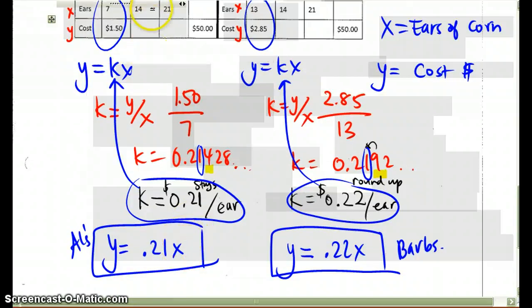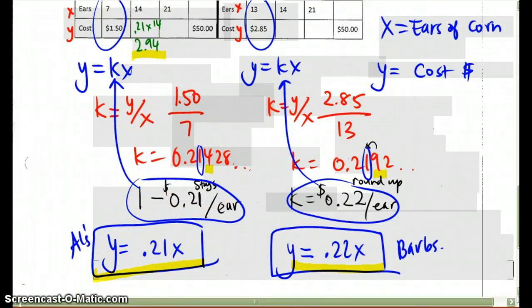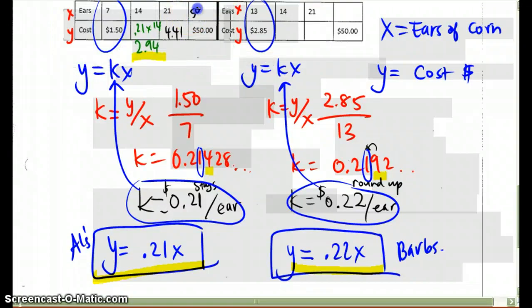Now I'm going to use the equation to help me find the rest of the cost. For every ear of corn at 21 cents, I'm going to use 14. I'm going to take the 14 ears of corn and multiply it with 0.21. I did 0.21 times 14, and I got 2.94. Then I'm going to take 21 and multiply that by 0.21, and I'm going to get $4.41. To fill out this blank right here, I'm going to take the $50, and I'm going to divide that by 0.21, and that's going to give me how many ears of corn, which are going to be 238.